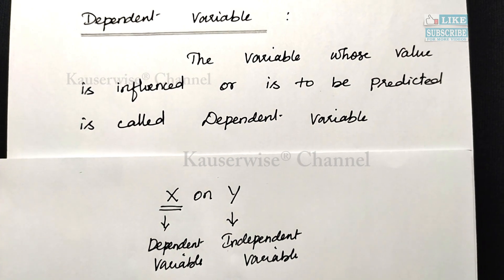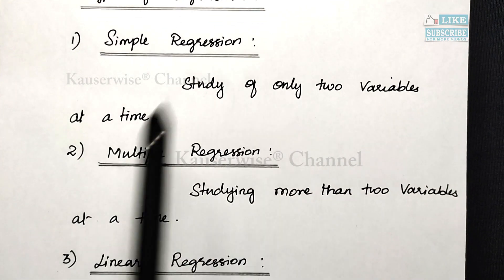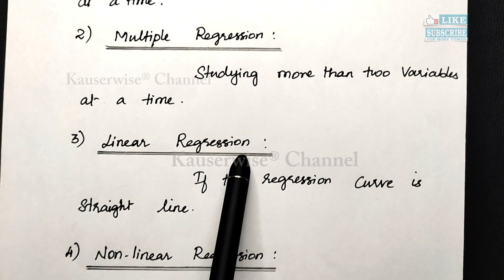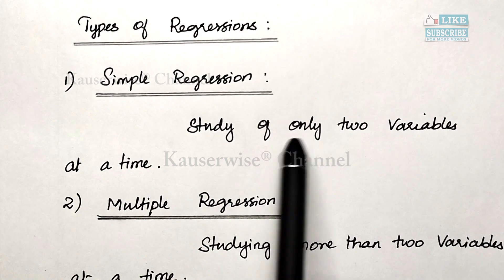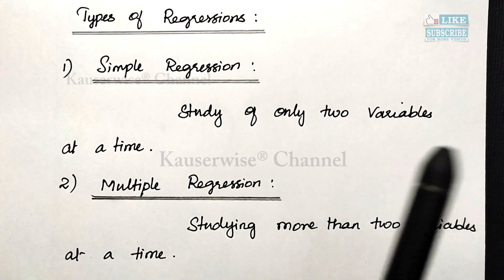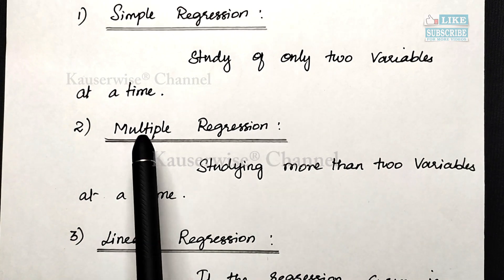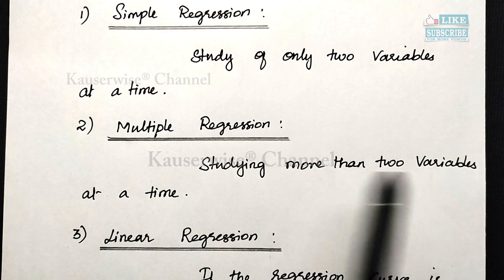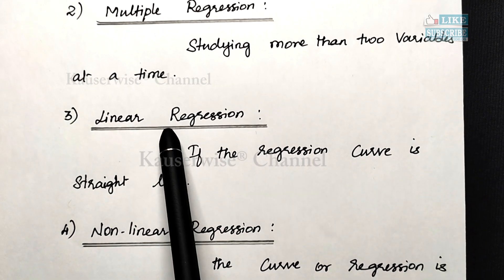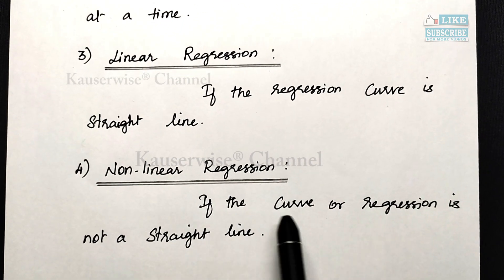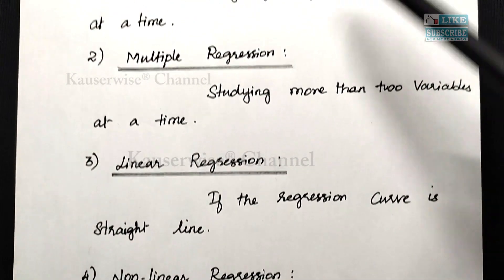Now let us see the different types of regression. Regressions are classified into four types. The first is simple regression — the study of only two variables at a time. The second is multiple regression — studying more than two variables at a time. The third is linear regression — if the regression curve is a straight line, it is called linear regression. The fourth is non-linear regression — if the curve is not a straight line, it is called non-linear regression.